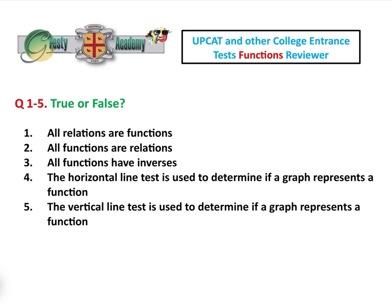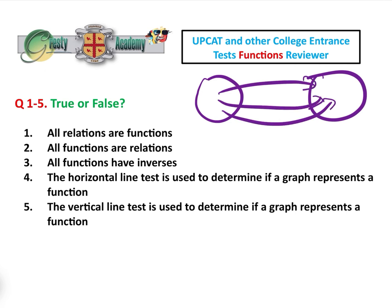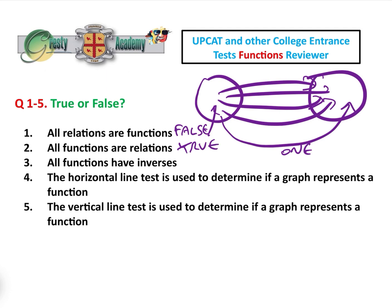Question number one: true or false — all relations are functions. A relation is basically anything where we have an input and outputs, with pretty much no rules. A function, on the other hand, has a restriction that every element in the input has to match with exactly one element of the output. That is the definition of a function. So a function is a subset of a relation. Therefore, 'all relations are functions' is false, but 'all functions are relations' is true.